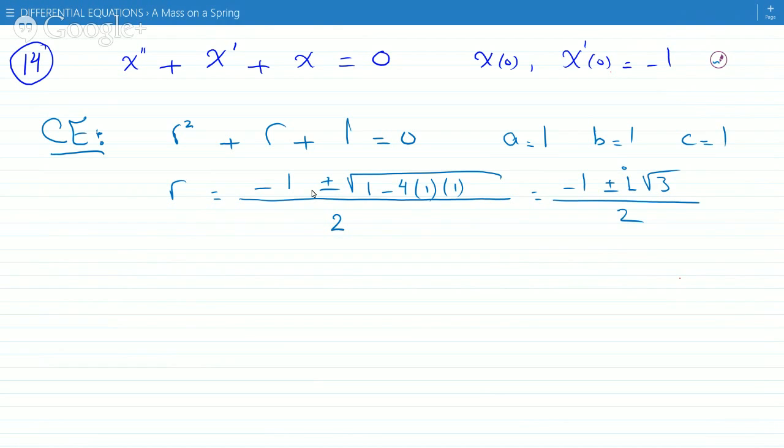So the fact that we've got complex roots, that just means this is underdamped motion. Complex conjugates. Underdamped motion.